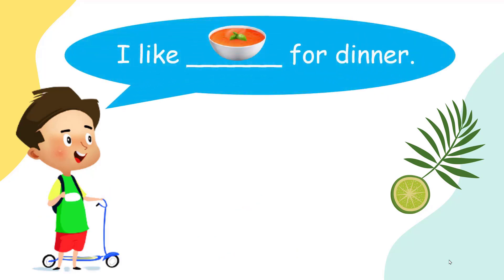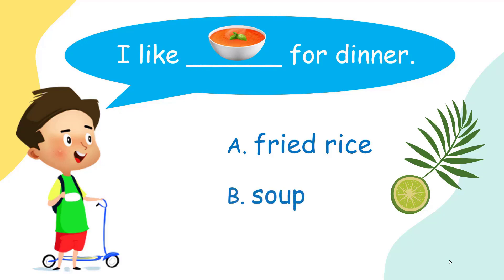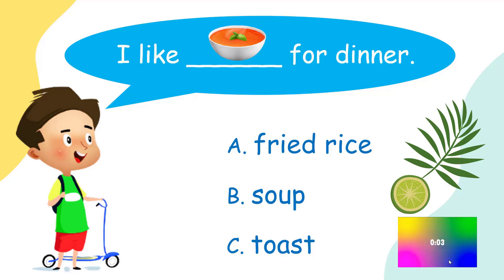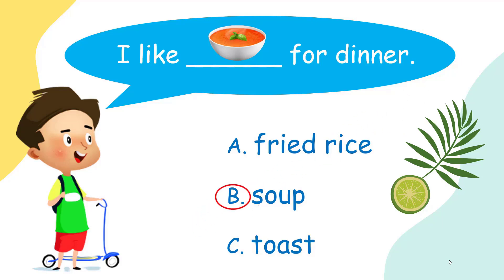The next sentence. I like ___ for dinner. Three options: A. Fried rice, B. Soup, C. Toast. You have five seconds. Go. Your answer is... It's B. Soup. Let's check it. That's right.